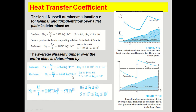The local Nusselt number at location x for laminar flow over a flat plate is: Nu_x = h(x)·x/k = 0.332 · Re_x^0.5 · Pr^(1/3), valid when Pr > 0.6 and Re_x < 5 × 10⁵.